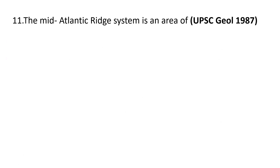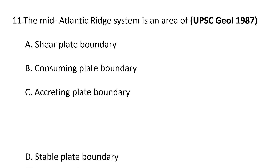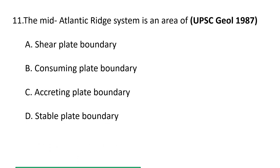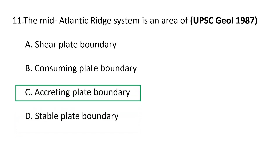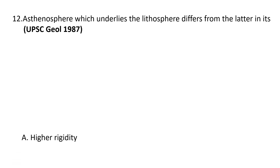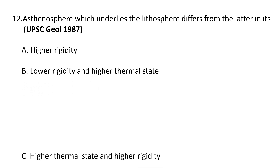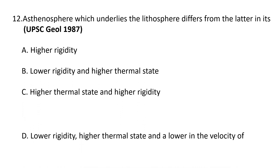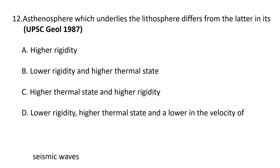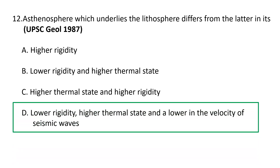Eleventh question: the Mid-Atlantic Ridge system is an area of — a) shear plate boundary, b) consuming plate boundary, c) accreting plate boundary, and d) stable plate boundary. The correct answer is c) accreting plate boundary. Twelfth question: the asthenosphere, which underlies the lithosphere, differs from the latter in its — a) higher rigidity, b) lower rigidity and higher thermal state, c) higher thermal state and higher rigidity, and d) lower rigidity, higher thermal state, and lower velocity of seismic waves. The correct answer is d), which is why the asthenosphere is also known as the Low Velocity Zone (LVZ).